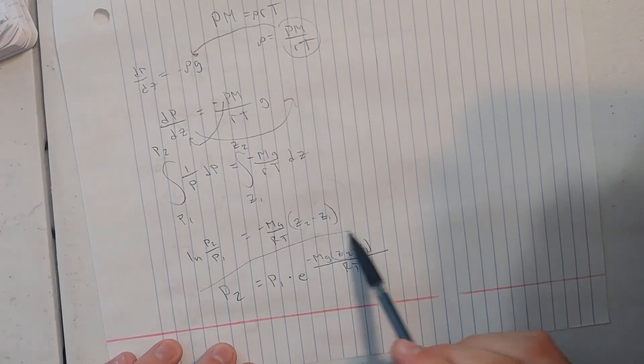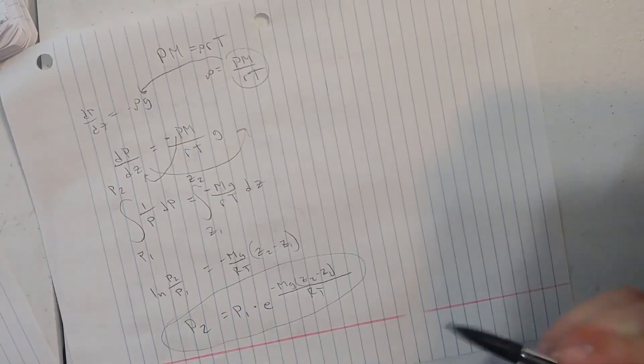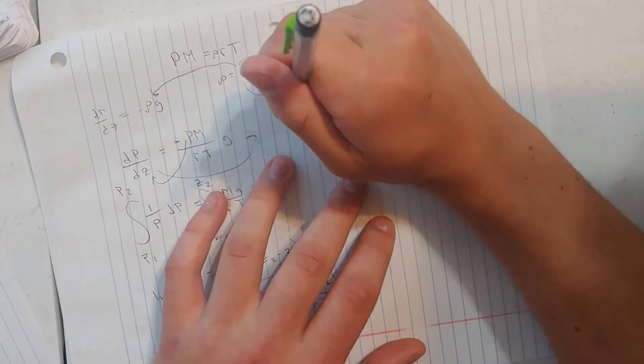So now this is our final form that we need in order to solve for a change in pressure due to a change in altitude. So now I'm going to do a quick example, putting some actual numbers in here.